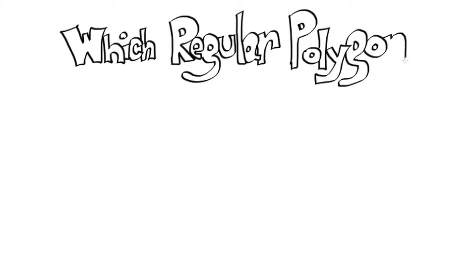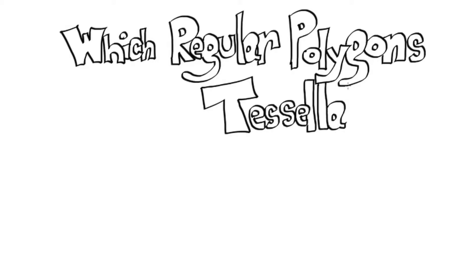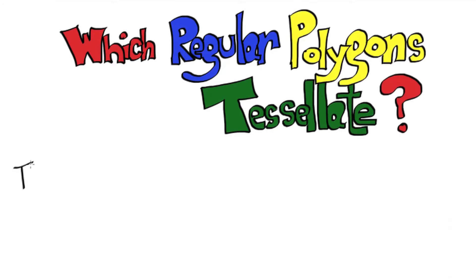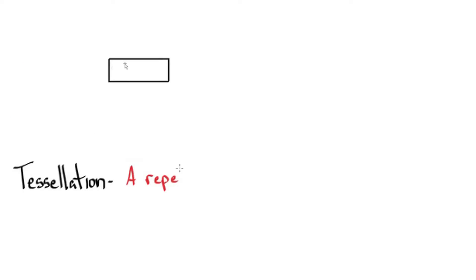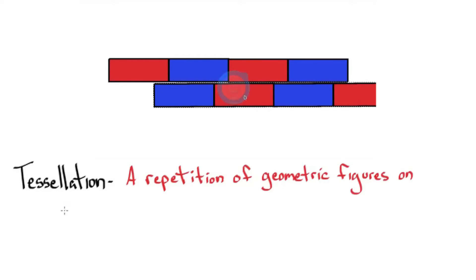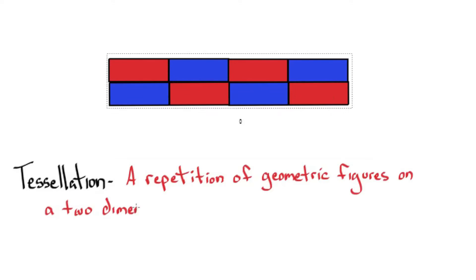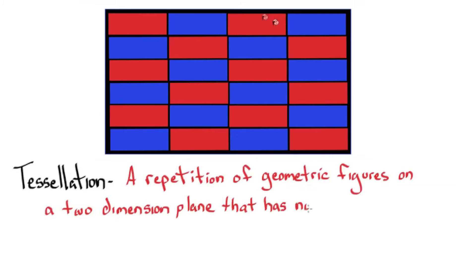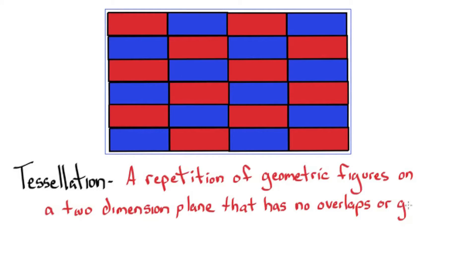Which regular polygons tessellate? First we have to talk about what a tessellation is. A tessellation is a repetition of geometric figures on a two-dimensional plane that has no overlaps or gaps.